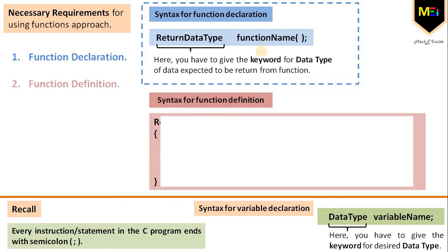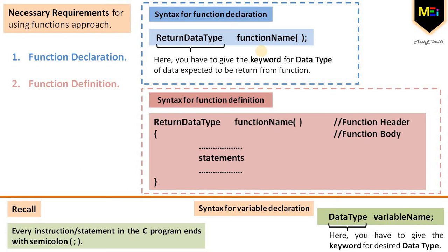Next is the function definition, which consists of a function header that identifies the function, followed by the body of the function containing the executable statements. The syntax is: return data type, space, function name, open and close parenthesis, then curly brackets with statements within. The content within the curly brackets is the function body, and the return data type space function name is the function header.